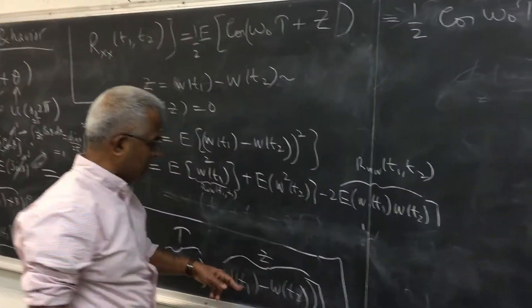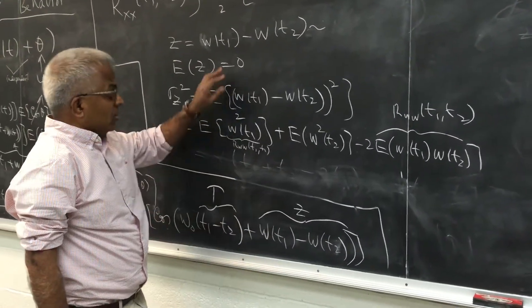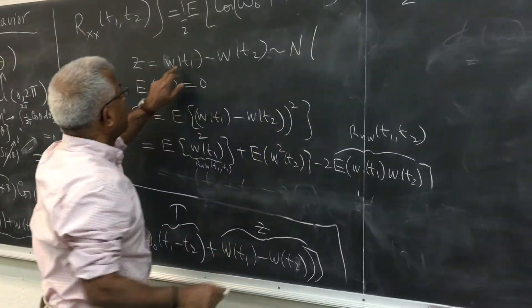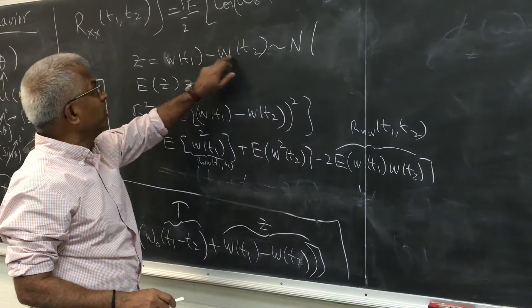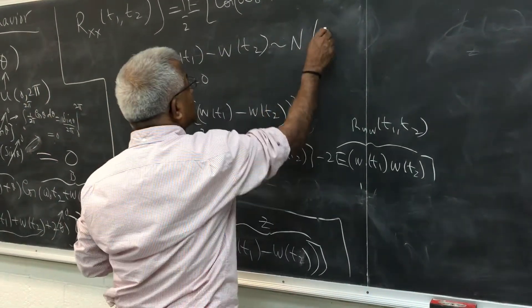First let's take a look at z. z is w(t1) minus w(t2). So that's a Gaussian random variable because these are jointly Gaussian. Each of them have 0 means, so its mean is 0.